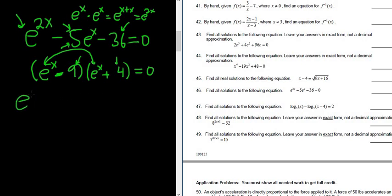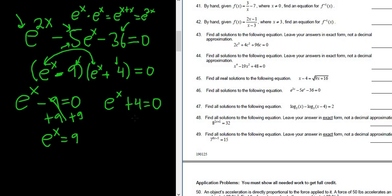So you have a product equal to 0, so now you set each factor equal to 0. So you set that equal to 0, and then you set this other piece here equal to 0. Here on this case, on the left, you add the 9, so you get e to the x equals 9. Then over here, you subtract the 4, and you get e to the x equals negative 4.